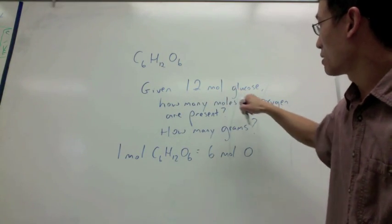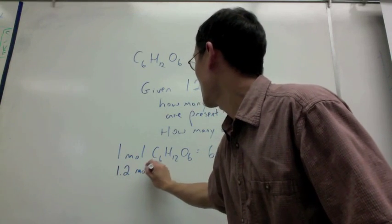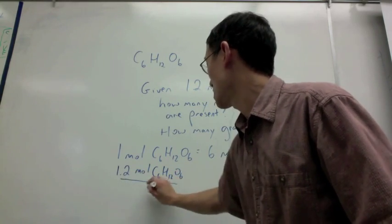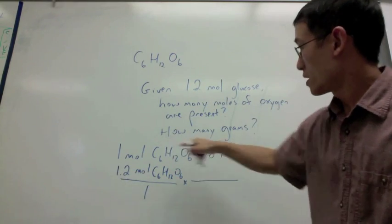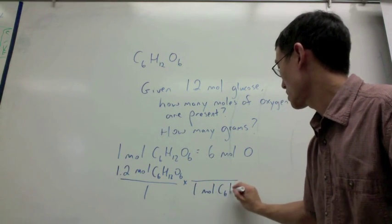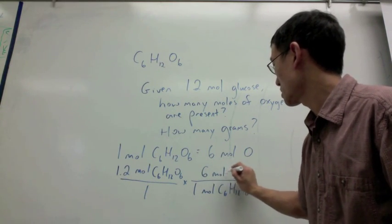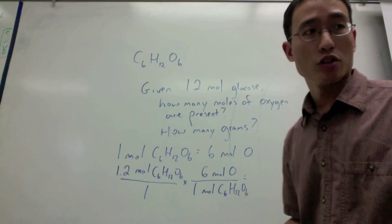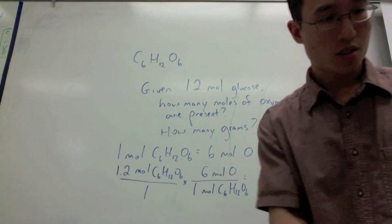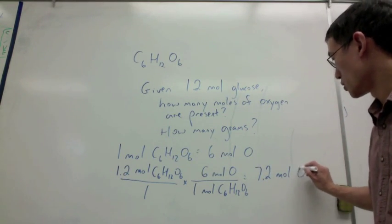Glucose, if I want to figure out moles of oxygen, I'm going to take my 1.2 moles of glucose. Write out this ratio here. So, for every mole of that, I get six moles of oxygen. So, 1.2 times 6 is 7.2 moles of oxygen.